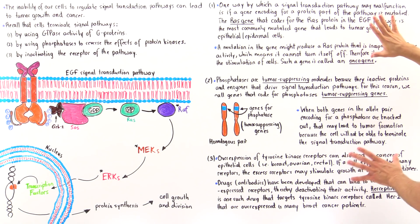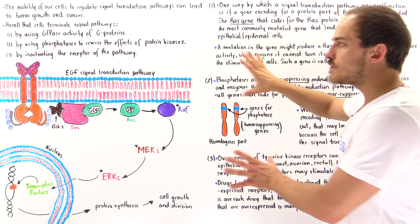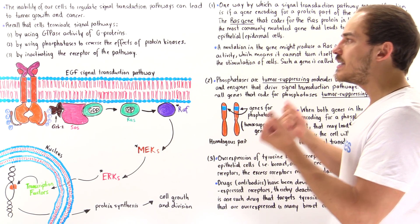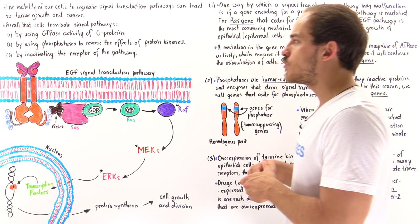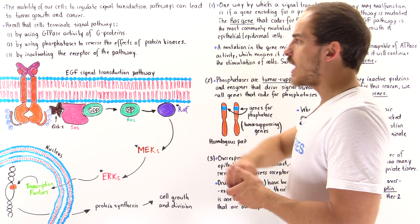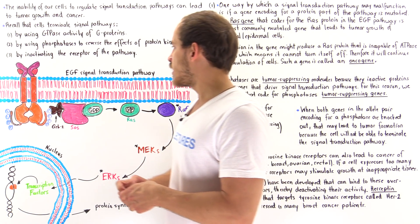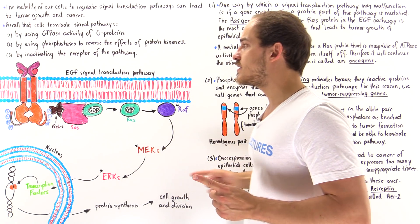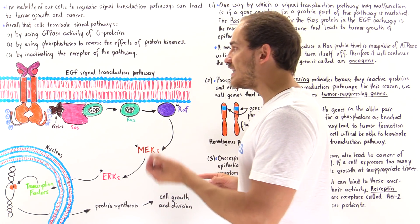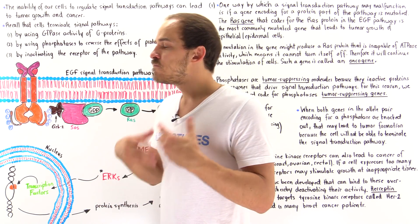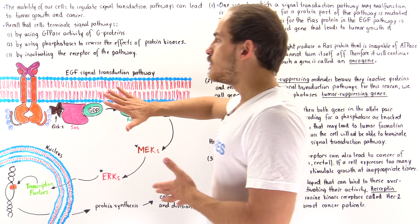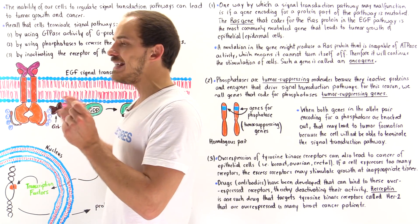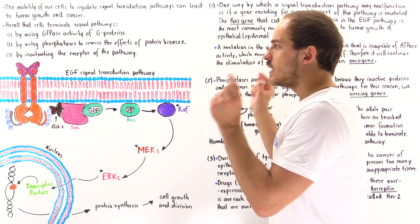Before we discuss the abnormality part, let's focus on how the normal process takes place and how our cells normally terminate these signal transduction pathways. As an example, we're going to focus on the EGF signal transduction pathway, where EGF stands for epidermal growth factor — the pathway used by cells that ultimately stimulates the growth and division of epithelial and epidermal cells. Let's begin with the binding of the EGF molecules onto their domains.